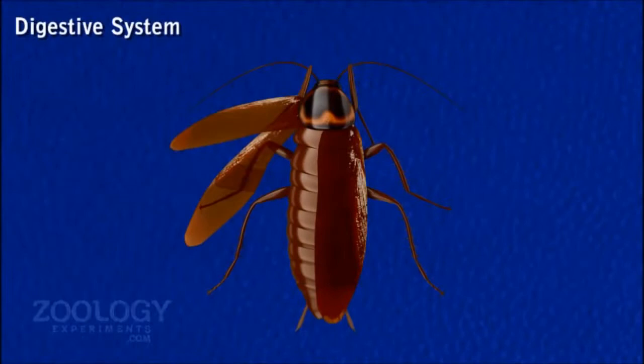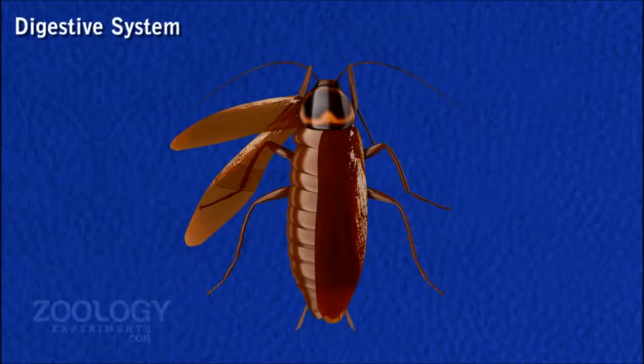Digestive System. This is the most prominent organ system in the body. It includes the mouth part, a long alimentary canal, and a pair of salivary glands.